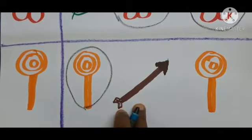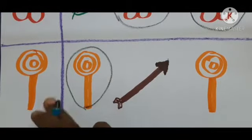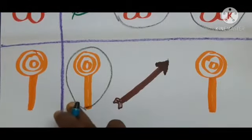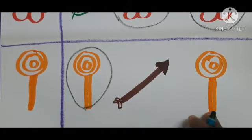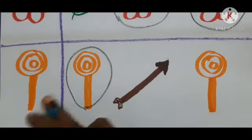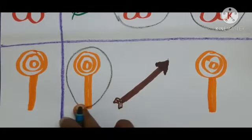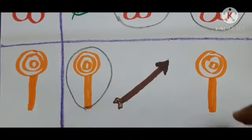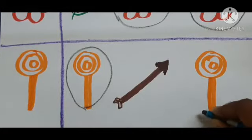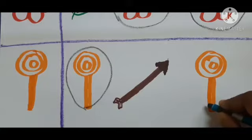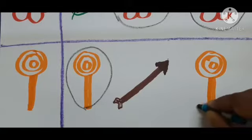See, this is arrow — is it matching, no children? No. Next. This is lollipop. This is also called lollipop. Like this, you have to encircle the same picture. This is matching, no children? Yes.